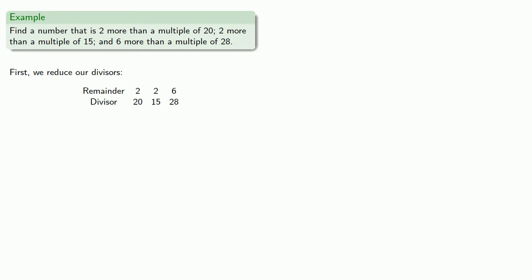First we'll reduce our divisors. Since 20 and 28 have a common factor, we divide the larger by the common factor and replace. 28 divided by 4 gives us 7.